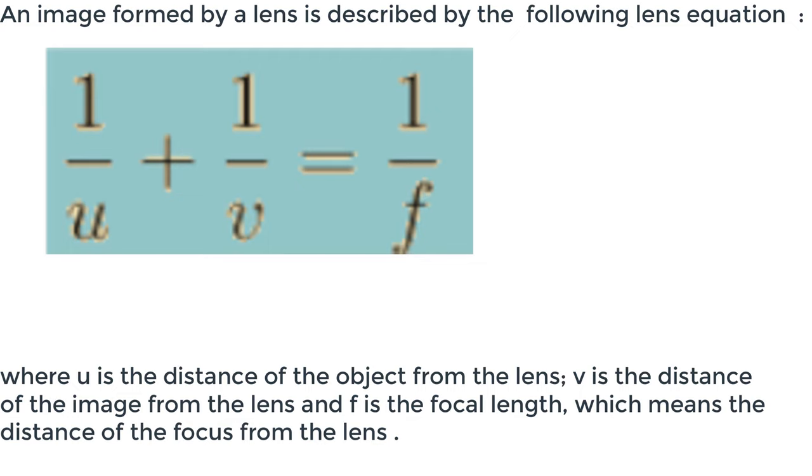An image formed by a lens is described by the following lens equation: 1 over u plus 1 over v equals 1 over f. Where u is the distance of the object from the lens, v is the distance of the image from the lens and f is the focal length, which means the distance of the focus from the lens.